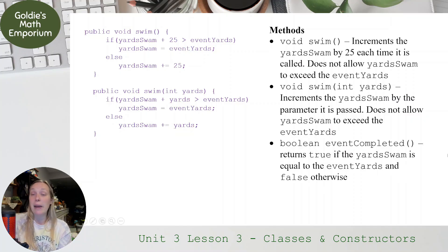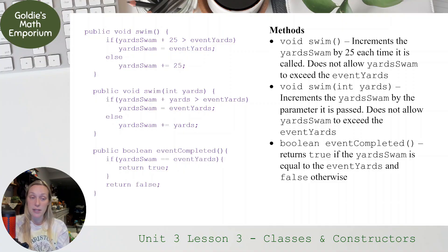And then my last one, boolean eventCompleted. So this is going to actually return a value, true or false, true if the yardsSwim is equal to eventYards and false otherwise. So just an if statement here. If yardsSwim equals eventYards, then I want to return true because the event has completed. The yardsSwim is equal to eventYards and I am done swimming. And if that's not true, then I just want to return false. And there it is.